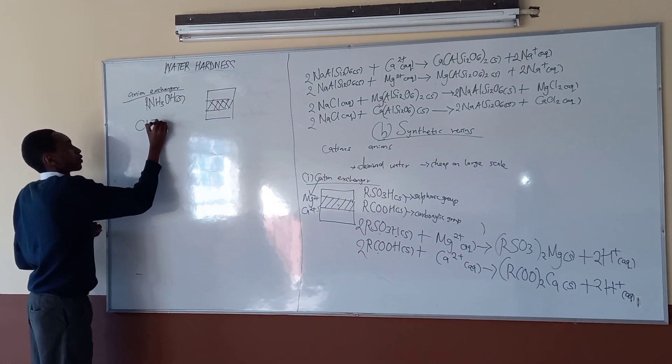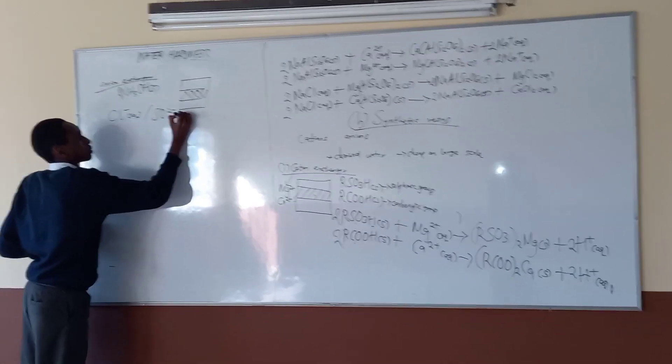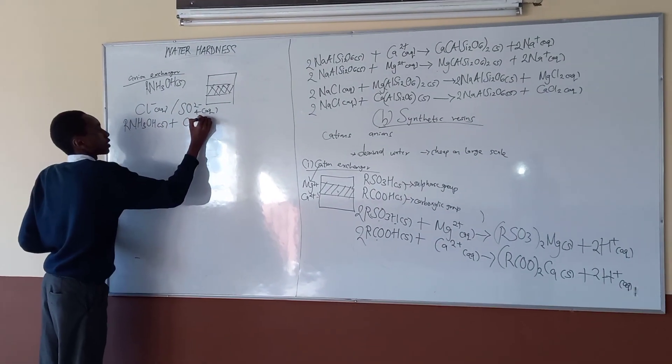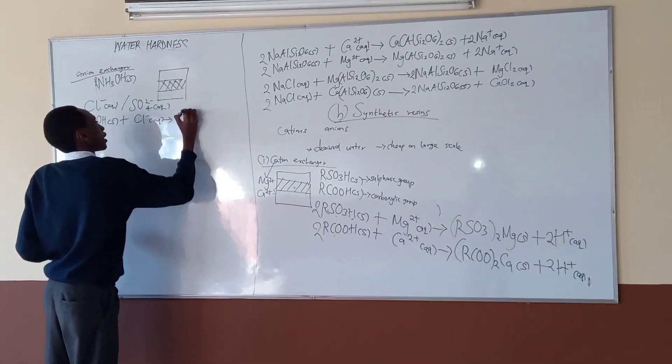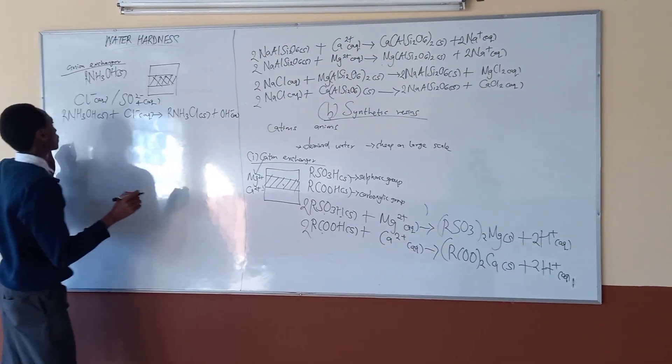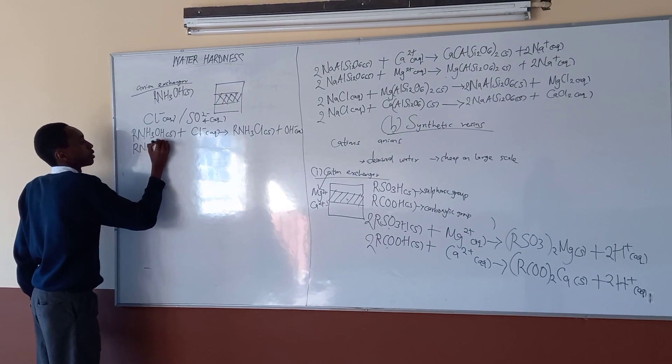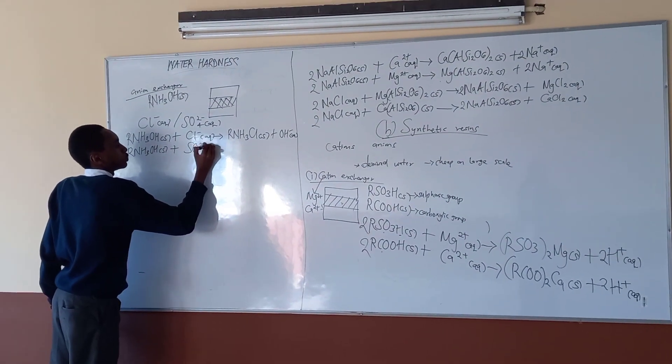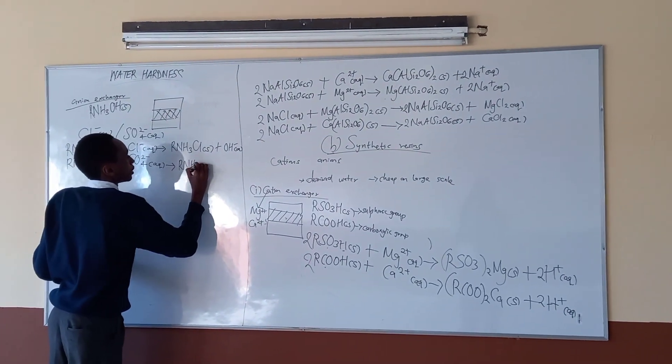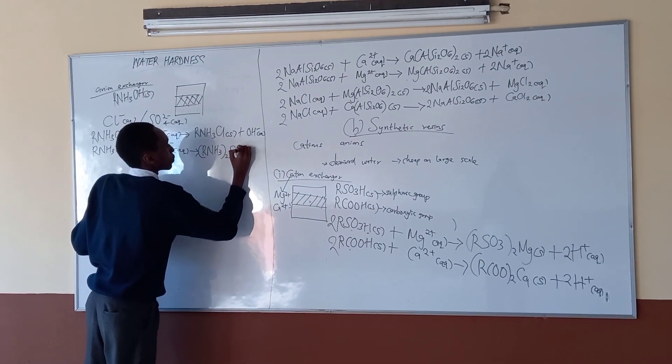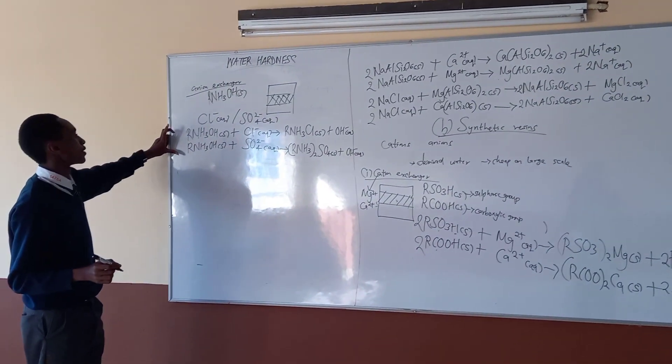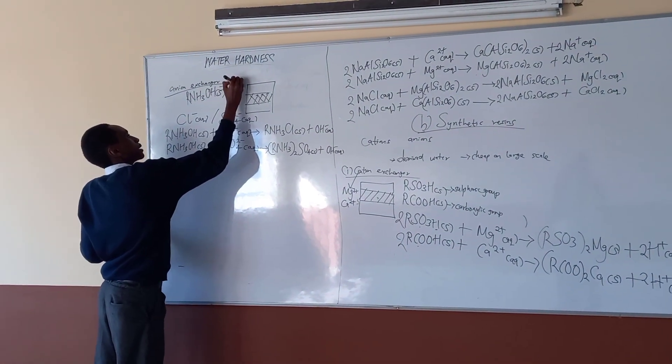So what we get to remove in the anion exchanger is the chloride ions or the sulfate ions. Part one, we take the chloride ions: RNH3OH solid plus chloride ions aqueous. We get to form RNH3Cl solid plus hydroxide ions aqueous. As to the sulfate, RNH3OH solid plus SO4 2- aqueous. What you get is (RNH3)2SO4 solid plus 2 OH- hydroxide ions aqueous. These are the reactions that will take place when we use the basic resin.